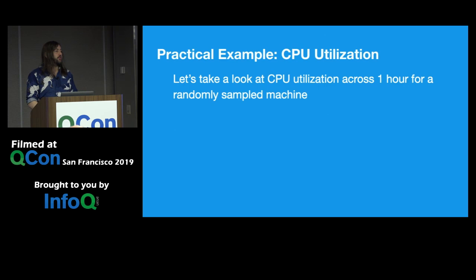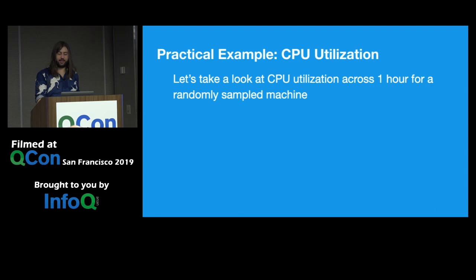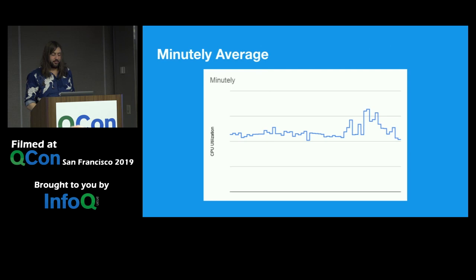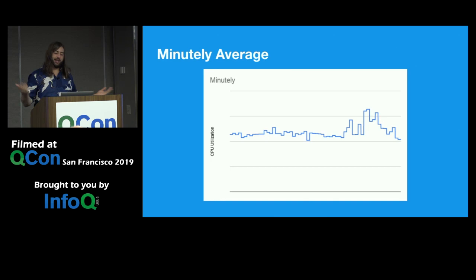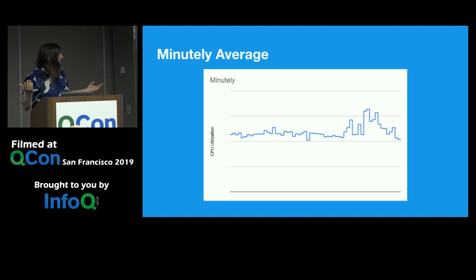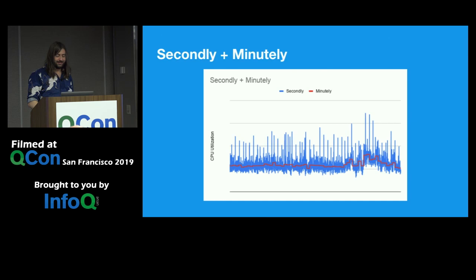To demonstrate the effect that sampling rate has on telemetry, we're looking at CPU utilization on a random machine sampled for an hour. This is sampled on a minutely basis. The actual scale doesn't matter for our talk here. We can tell from this that utilization is relatively constant. At the end, there's a brief period where it's a little bit higher and then comes back down to normal. But other than that, it looks pretty even.